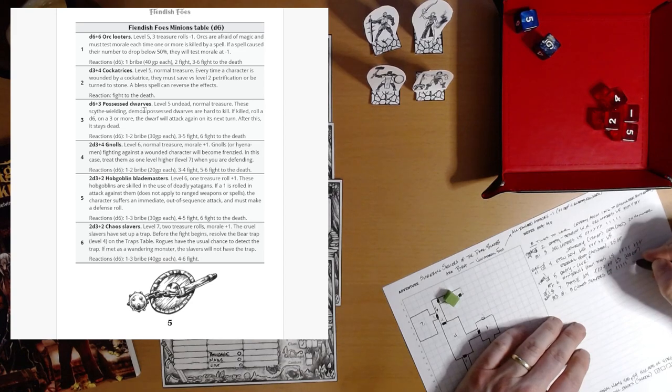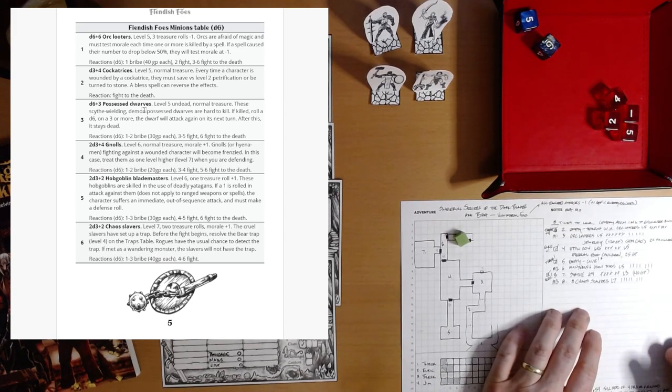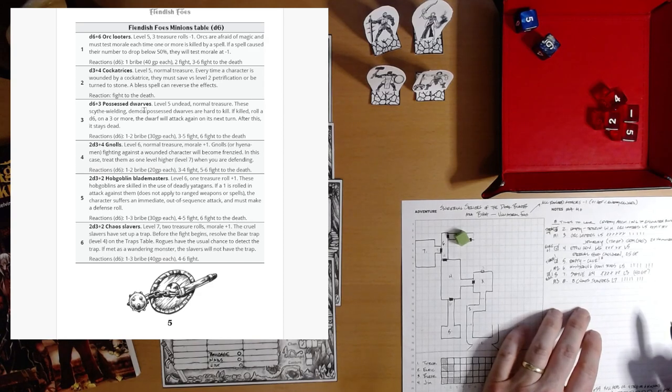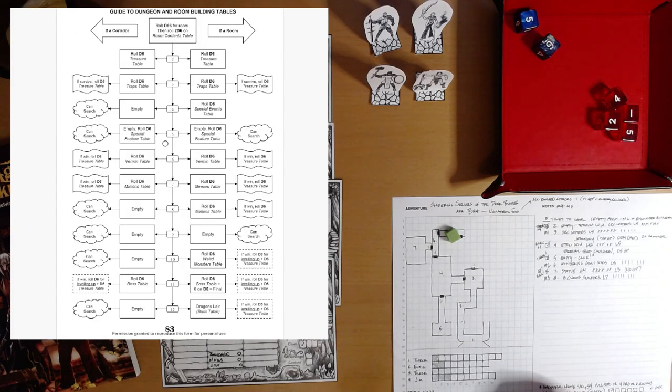Level seven. Got eight of them. Two treasure rolls. More L plus one. The cruel slavers have set up a trap. Before the fight begins, resolve the bear trap, level four, on the traps table. We need to find the traps table. Going to my alphabetized index. Let's go to the unalphabetized table of contents. I'll do control F. It's on page 62.